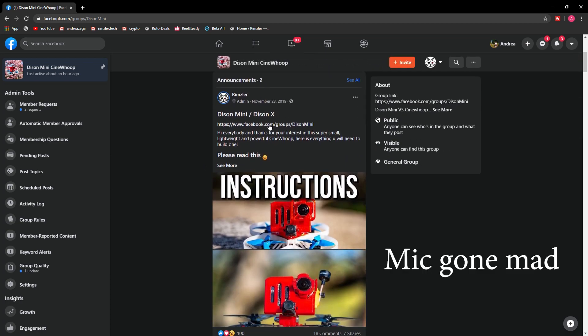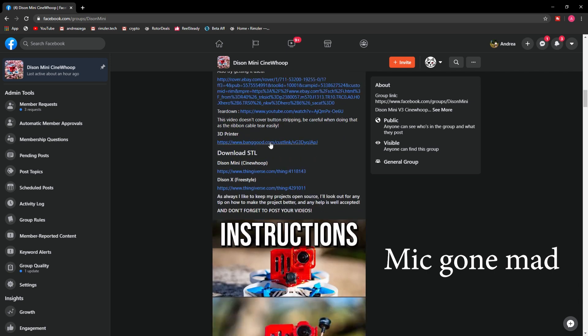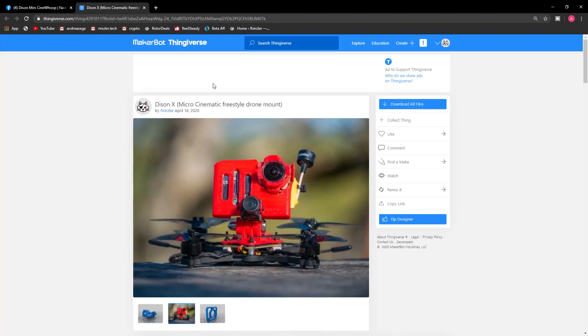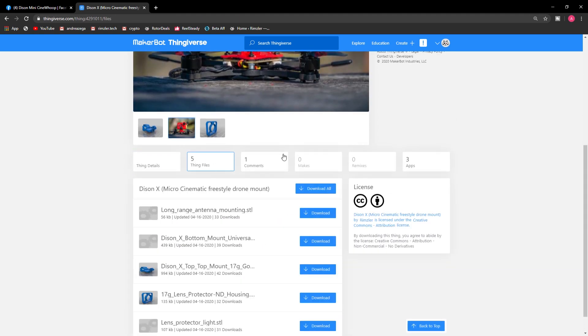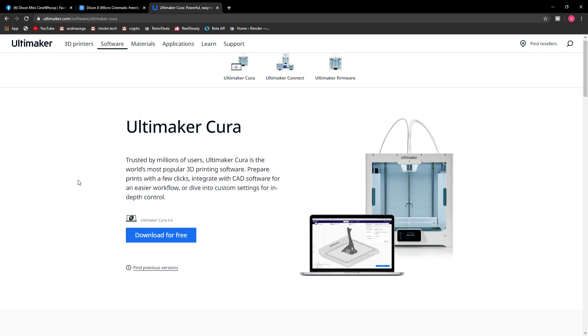First thing first, join the Dyson Mini Cinewhoop group. In the announcement tab you'll find all the links and everything you need. At the end of the page there's the STL, just click on it and Thingiverse will open. You can also look for it on Thingiverse and Rimsler. Here you can download all the files you need and take a look at the print settings because I write them there.